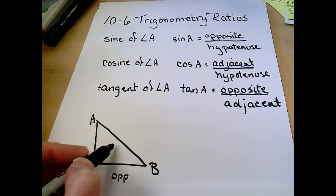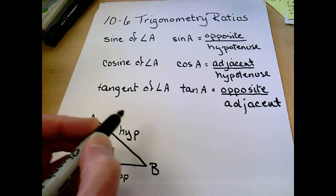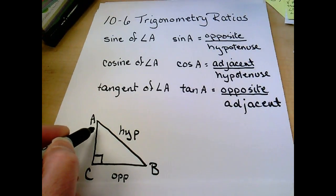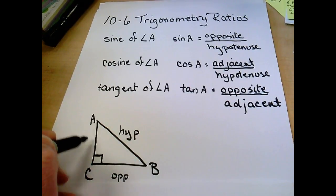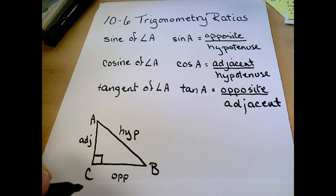The hypotenuse is always opposite your right angle. And the adjacent side is the one that it's touching besides the hypotenuse. If you stood at angle A and touched each side, you would touch AC and AB. So AC would be my adjacent side to angle A.